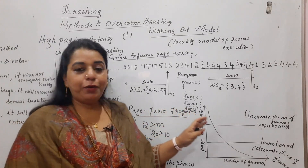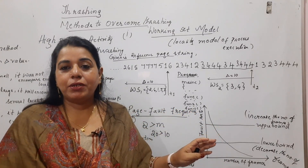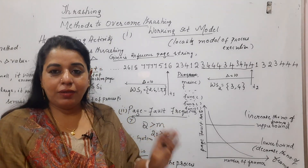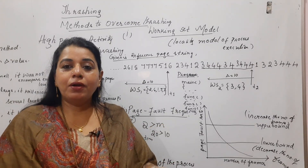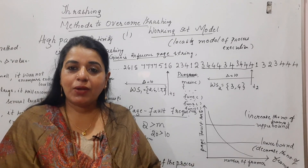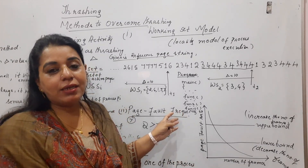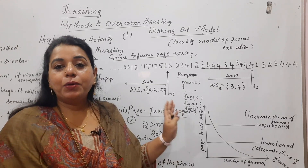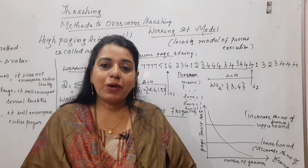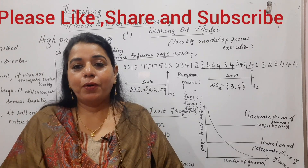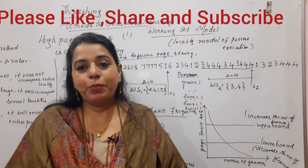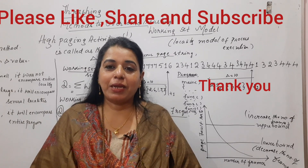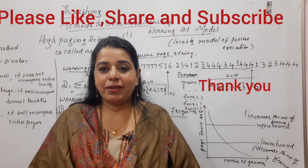This is what you need to know about the different solutions to overcome the problem of thrashing. In the previous session, I explained what thrashing is and its causes. In this session, I explained the two major methods to solve thrashing: the working set model and the page fault frequency method. Hope you find this session useful. If you do, please like, share, and subscribe to my channel. Thank you. Bye-bye. Take care.